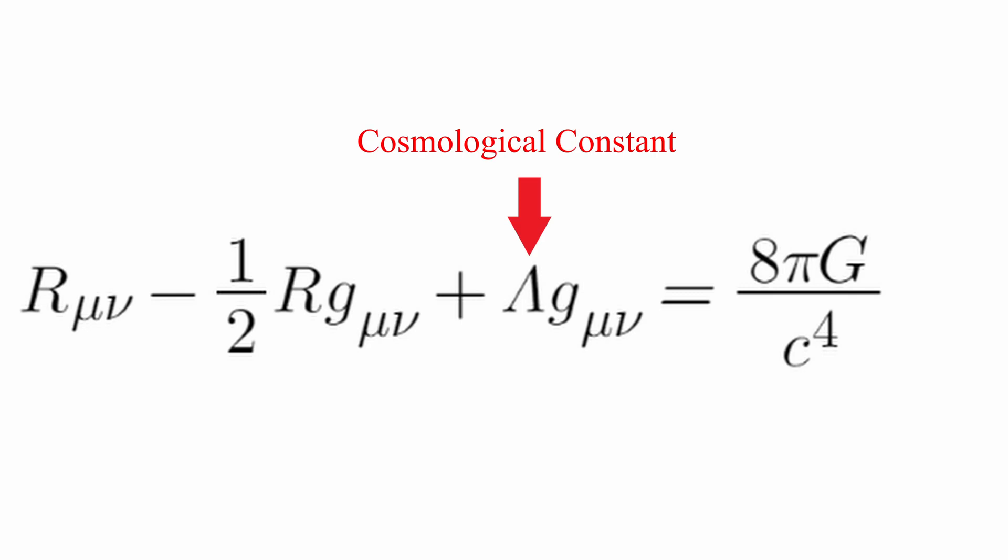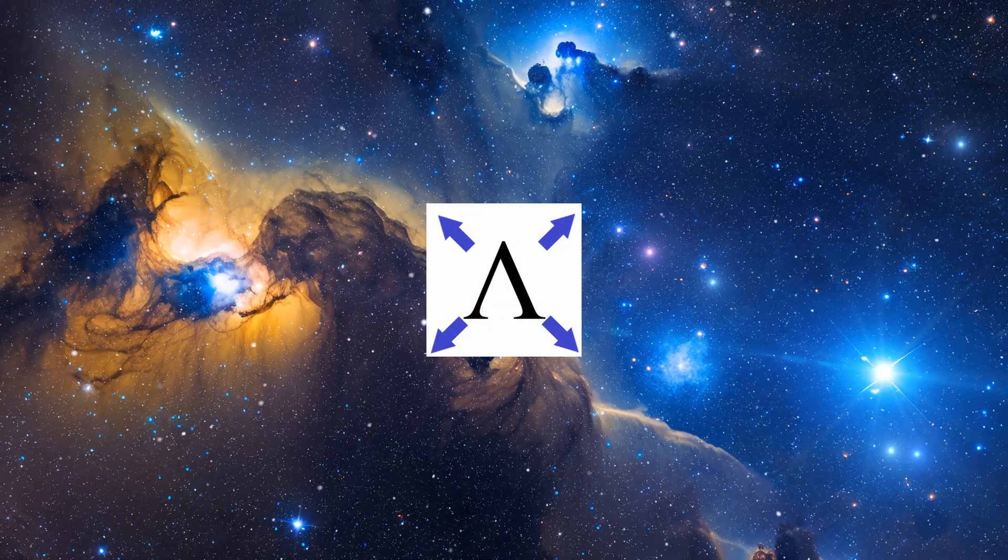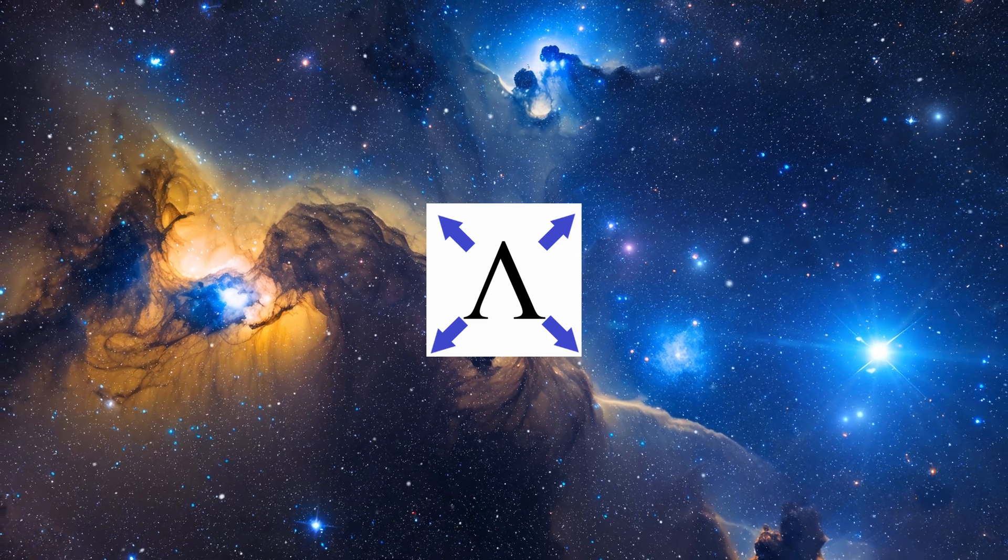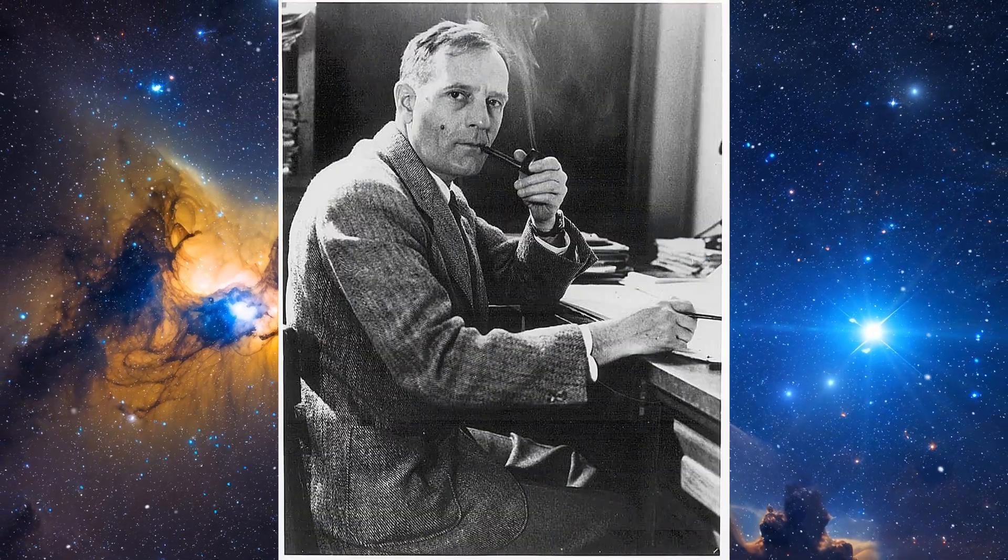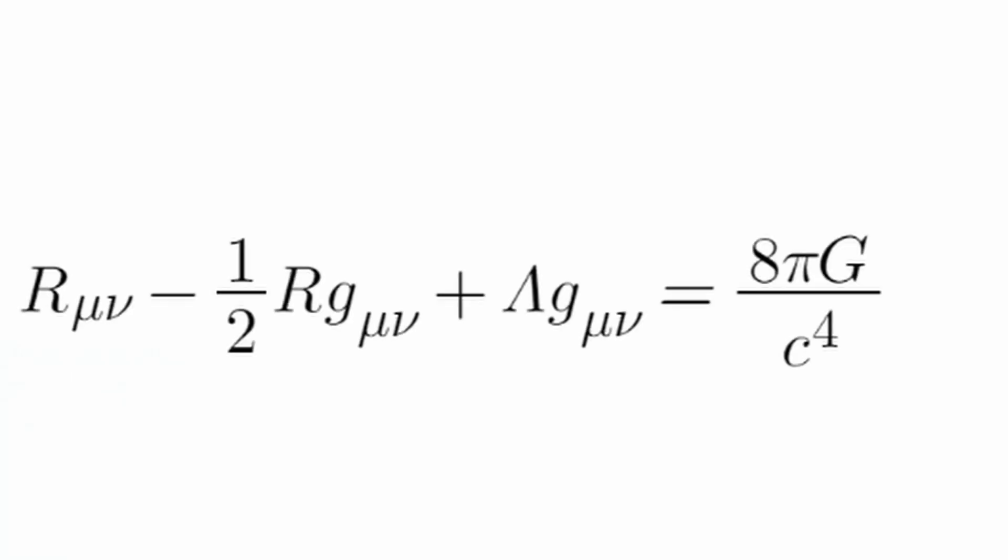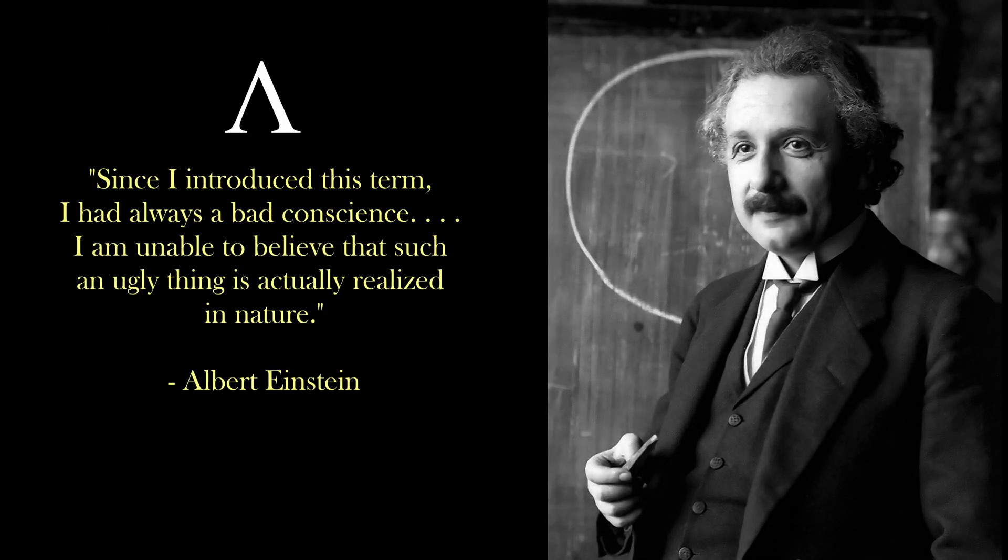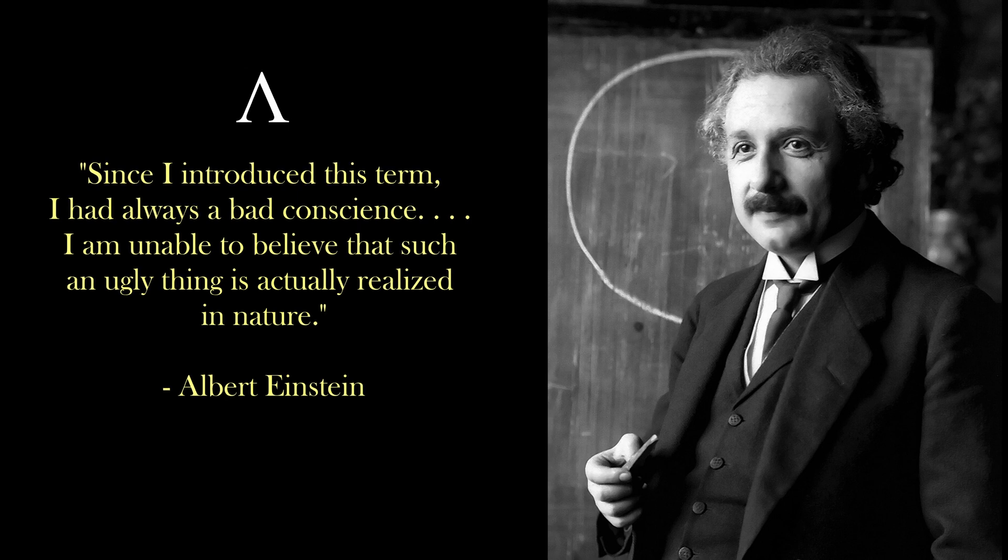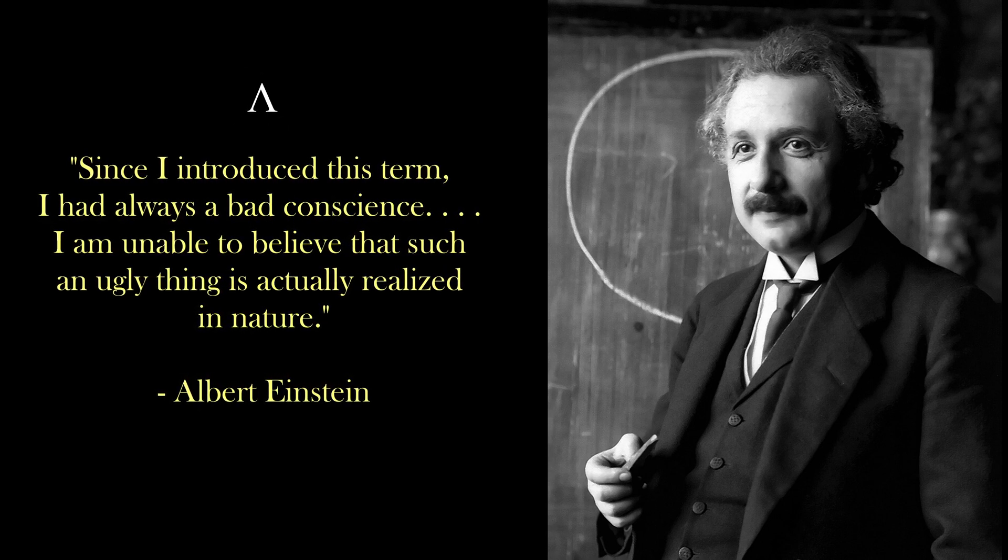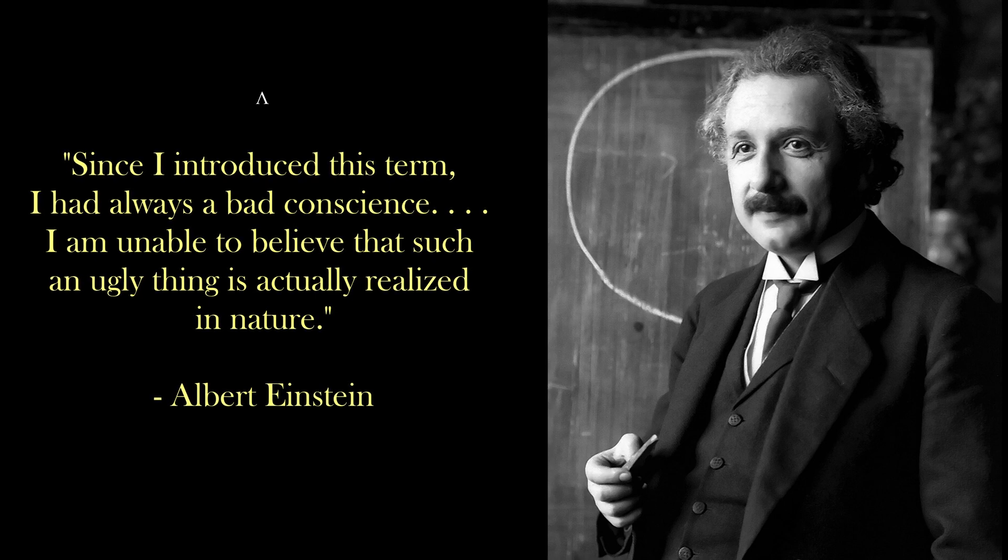Now, back to Einstein. Remember, he believed that the universe was unchanging and so he added his anti-gravity cosmological constant to his equations to prevent the universe's gravitational collapse. He added this to counterbalance the universe and to keep it in a static state. However, Hubble showed that the universe was actually expanding. Knowing this, Einstein removed his now unneeded cosmological constant and proclaimed that adding it to his equations was his biggest blunder. Einstein said, Since I introduced this term, I had always a bad conscience. I am unable to believe that such an ugly thing is actually realized in nature. That was 1929. And that's how cosmology stayed.